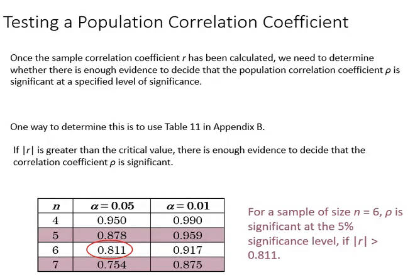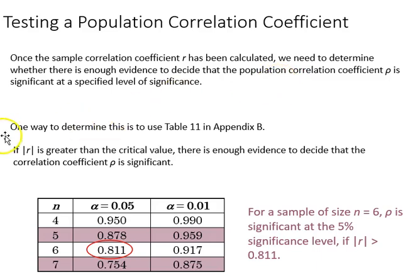Beyond calculating a correlation coefficient for a sample, we often want to know whether or not we can generalize that correlation to the population — here we're making a discussion of statistical significance. If we're talking about a population coefficient, we're looking at the Greek letter Rho, which represents the population correlation coefficient. We're going to want to know if our sample R is a good estimate of our population Rho, and one way to determine that is to find our cutoff values at alpha levels of 0.05 or 0.01.